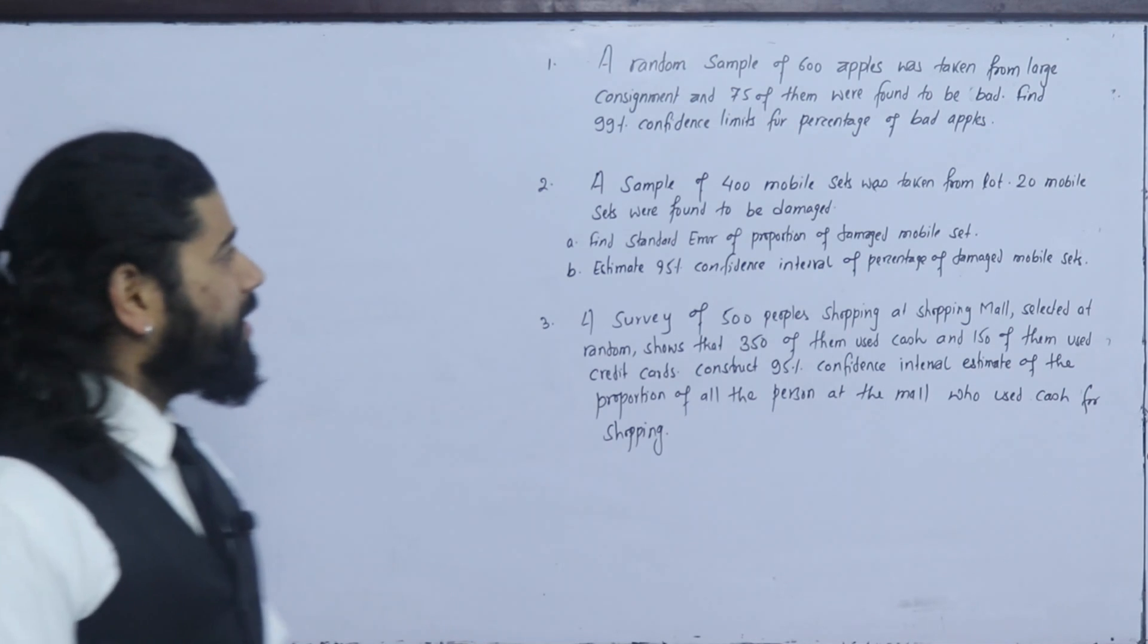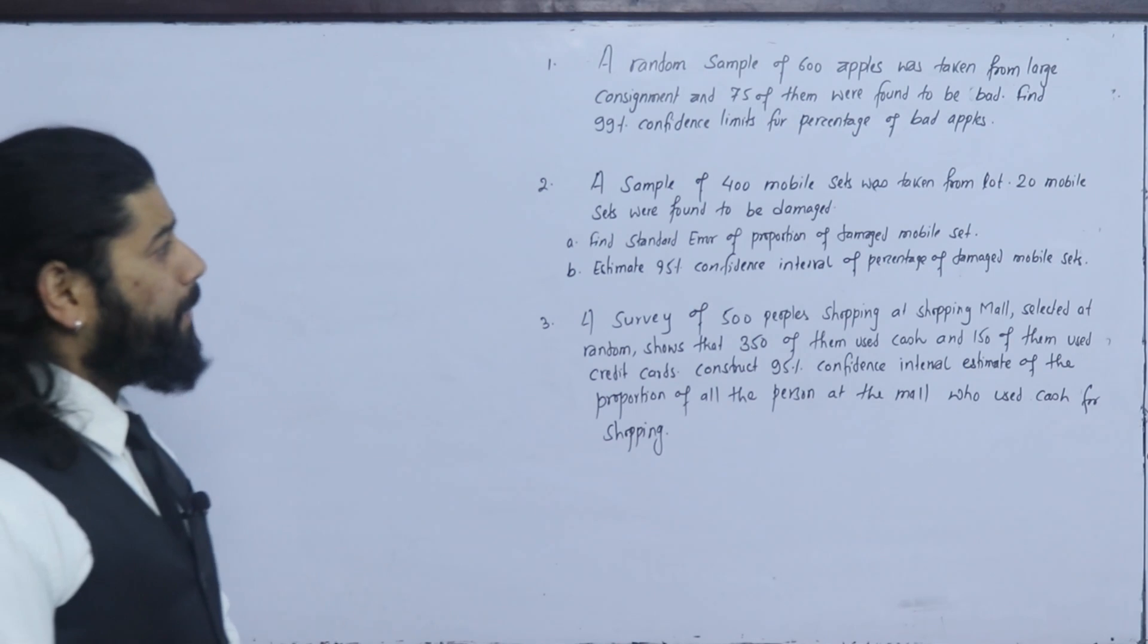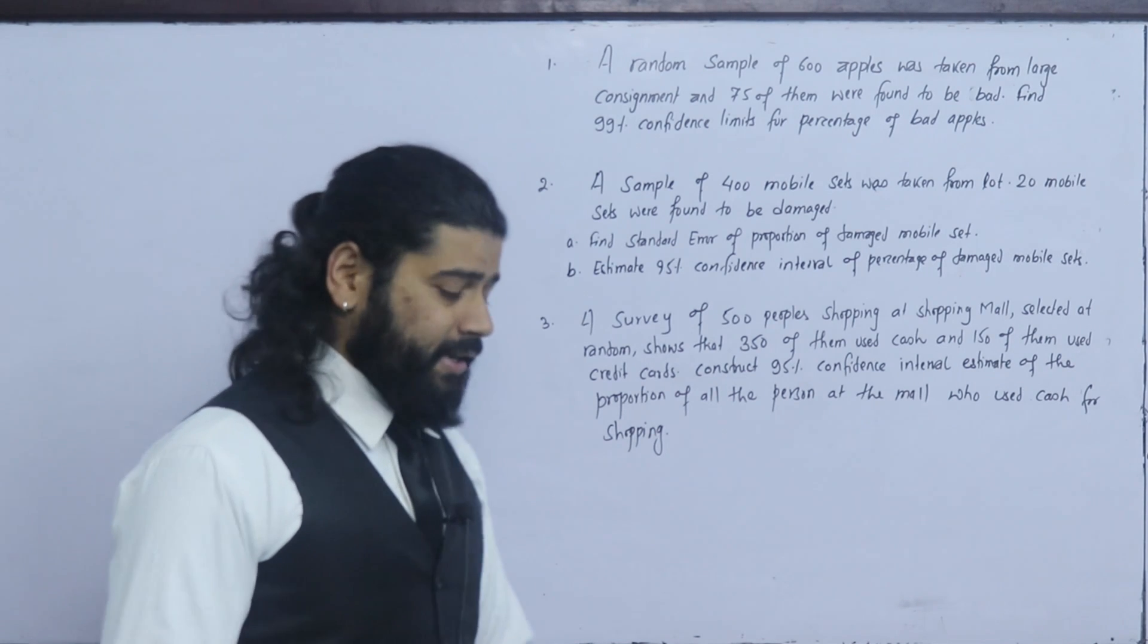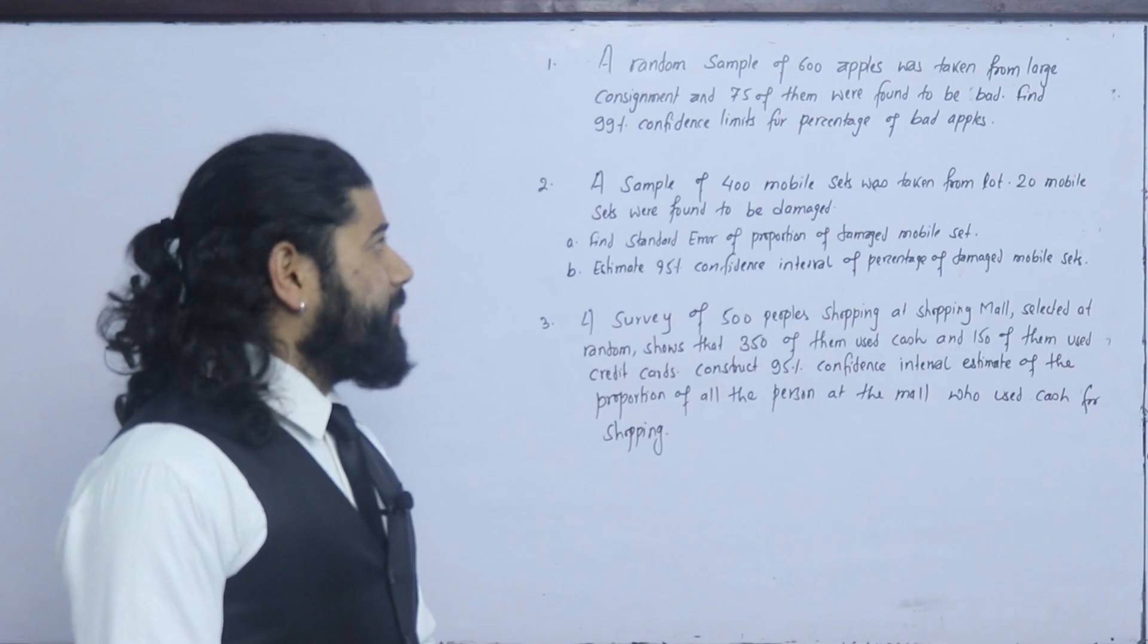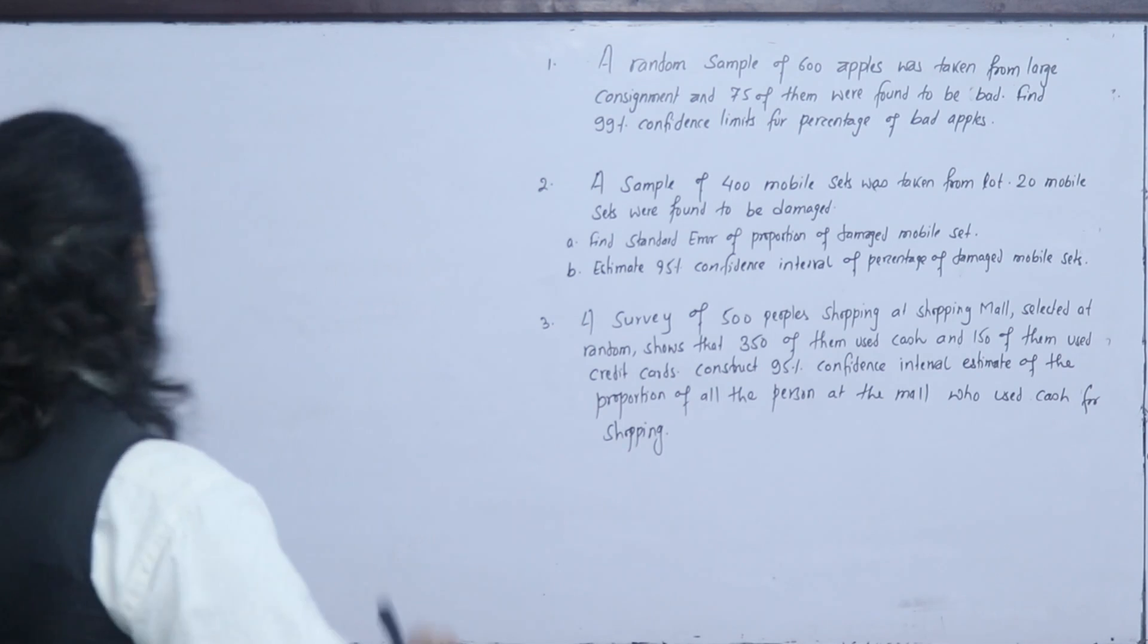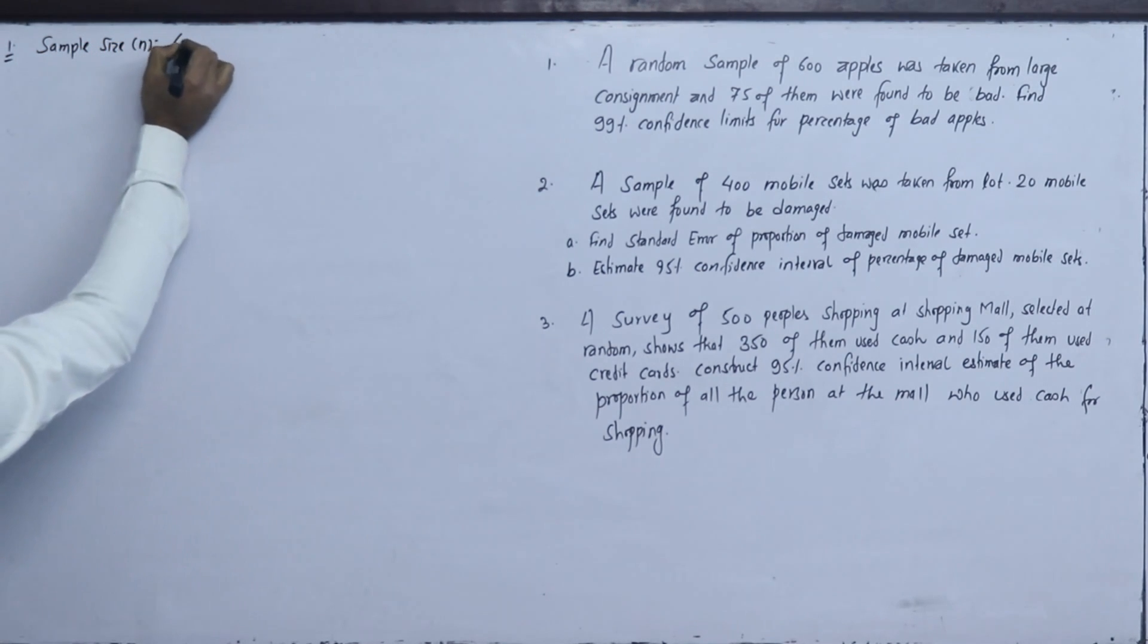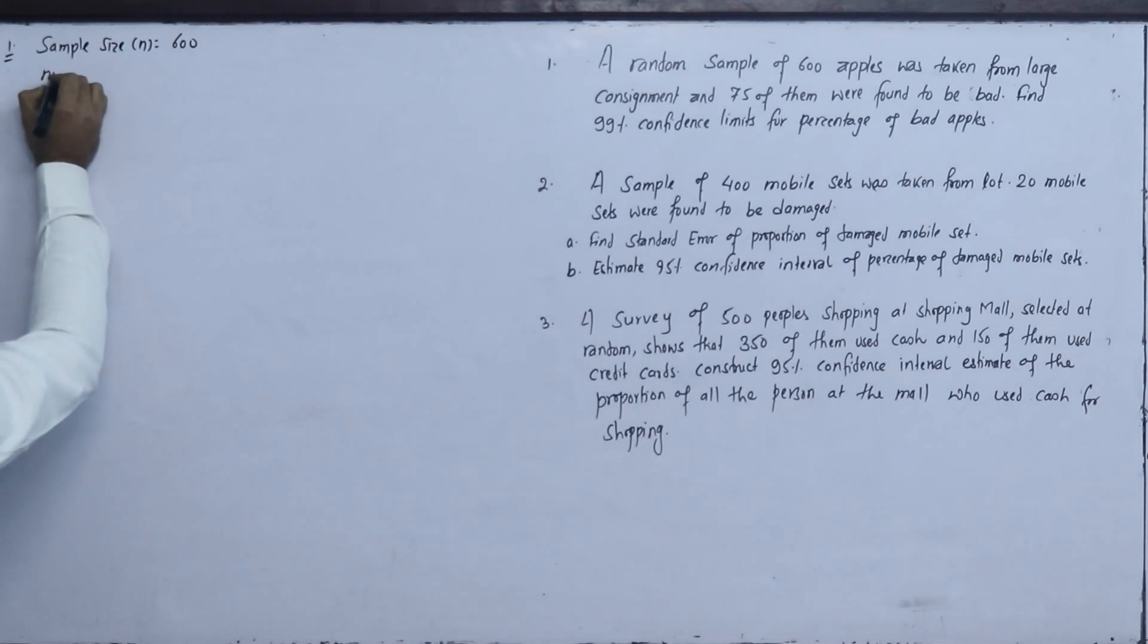Now, the first question: A random sample of 600 apples was taken from large consignment and 75 of them were found to be bad. Find the 99% confidence limit for the percentage of bad apples. You can see the number of bad apples.